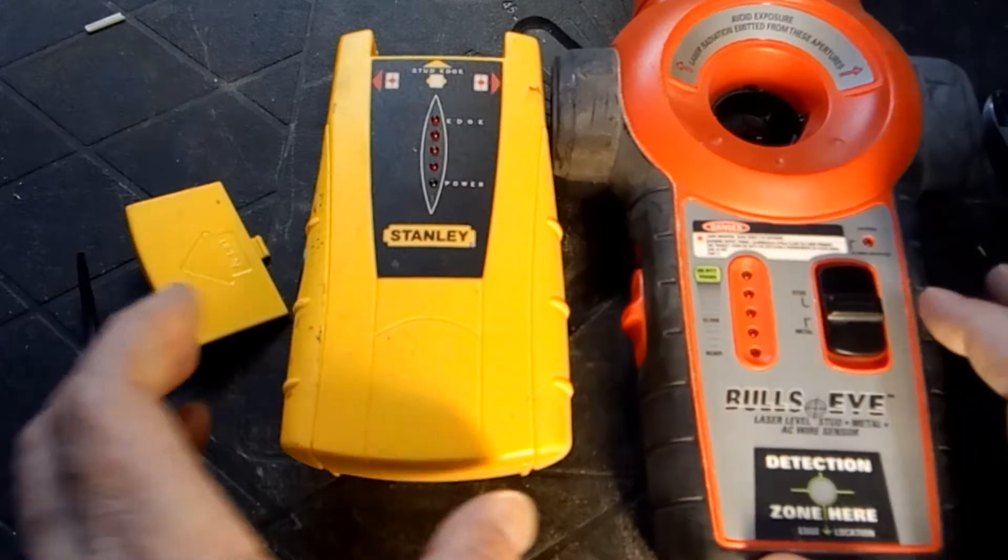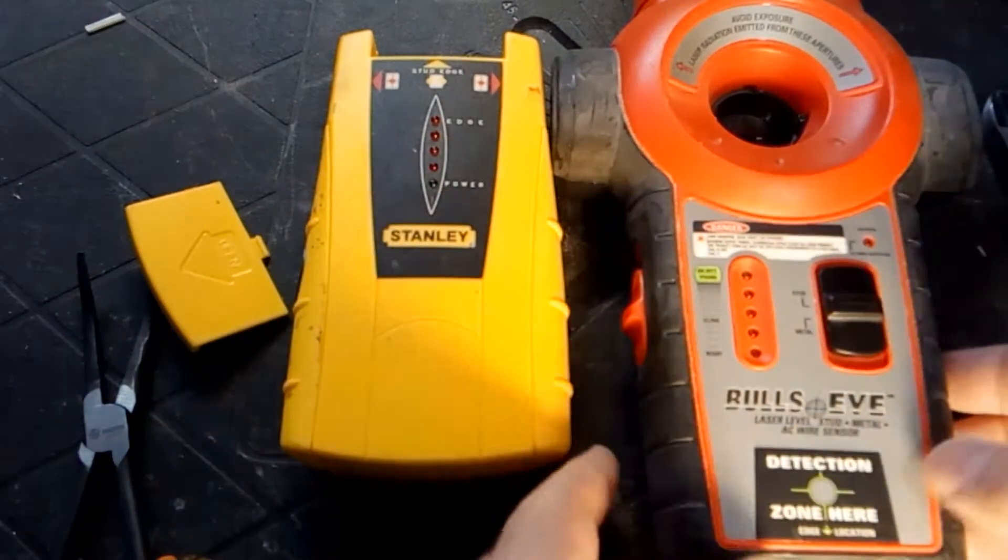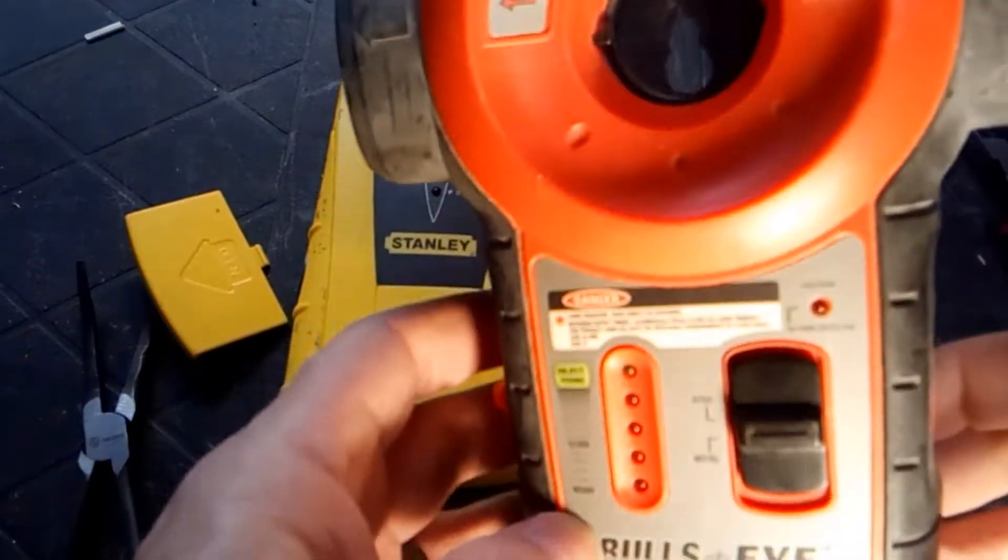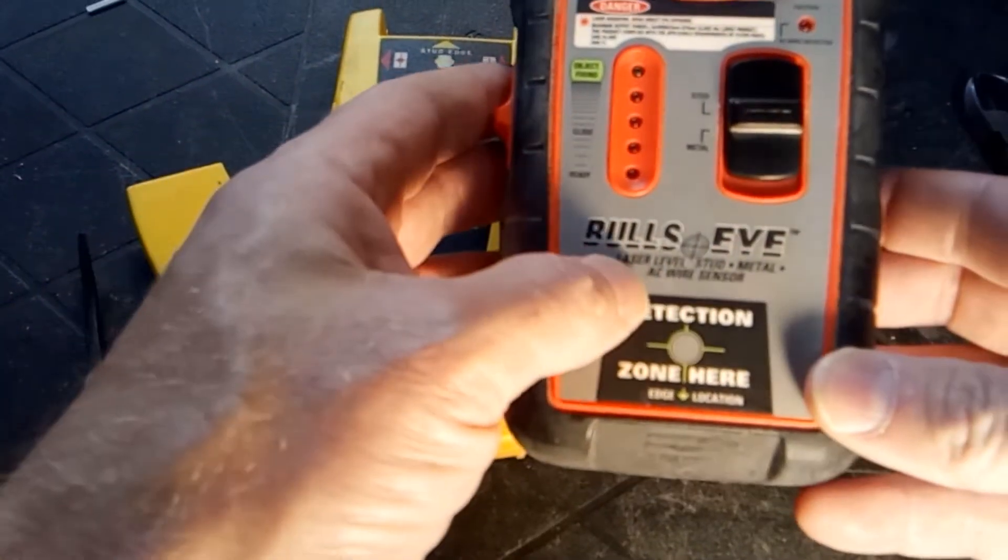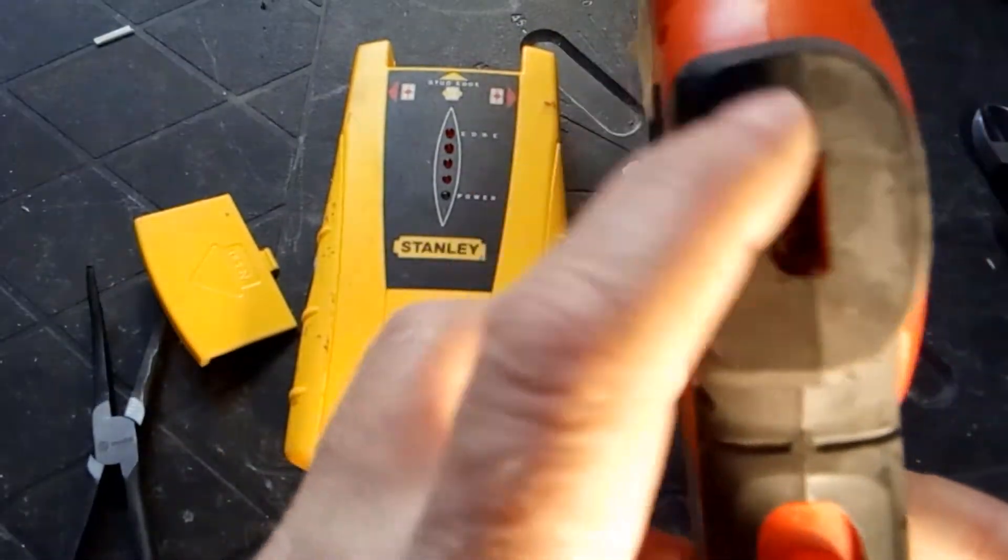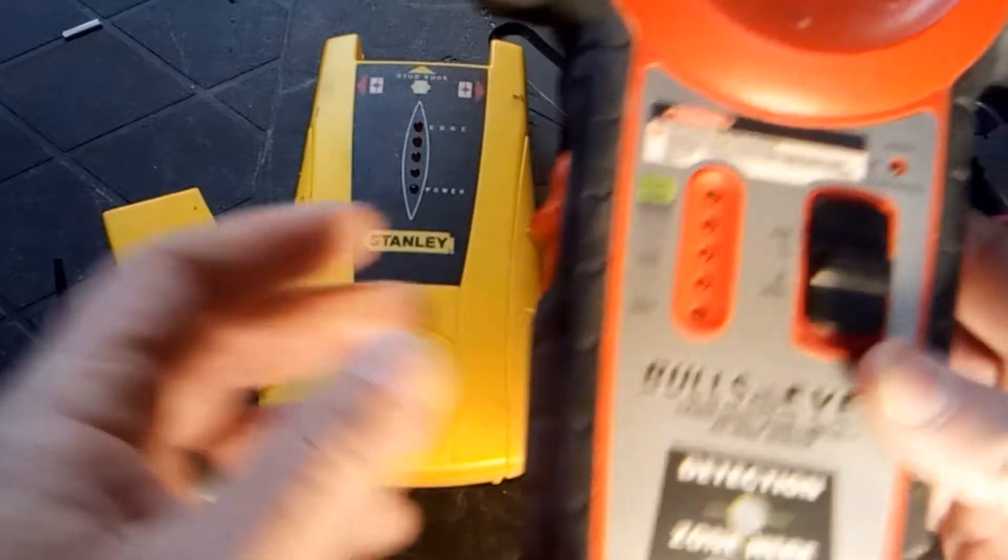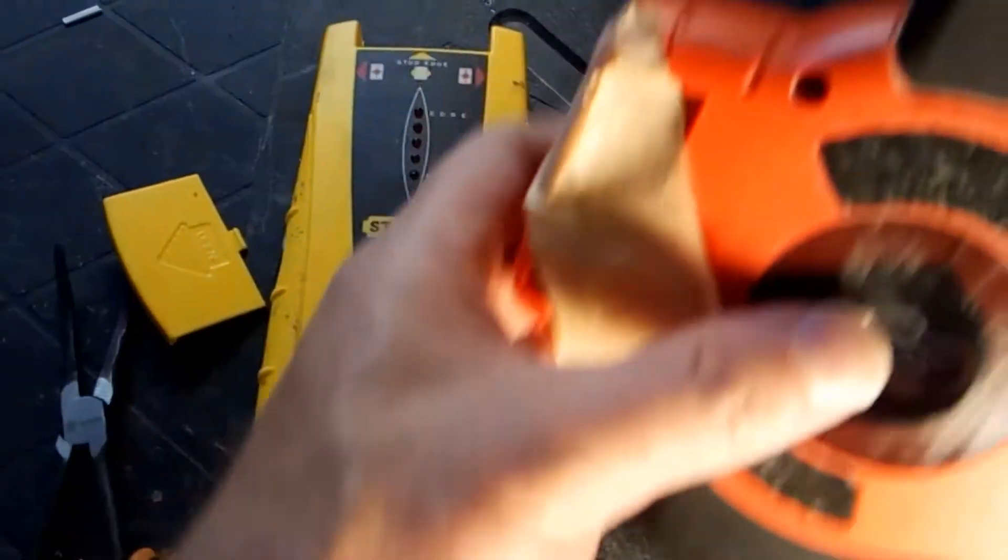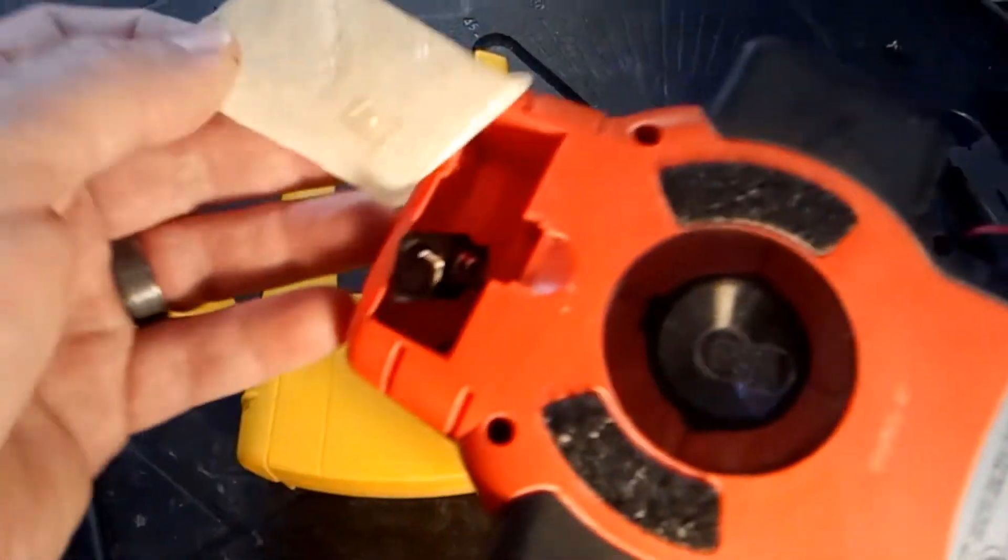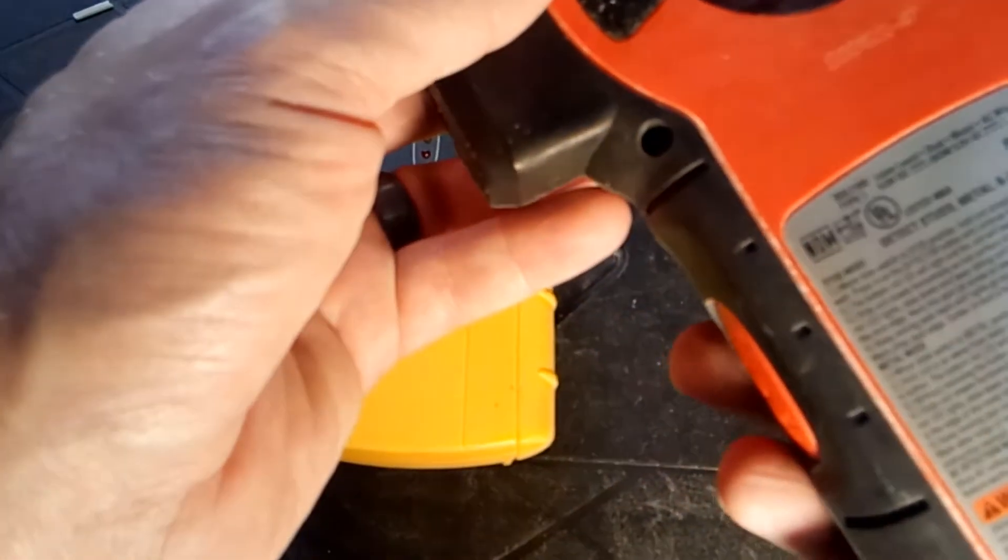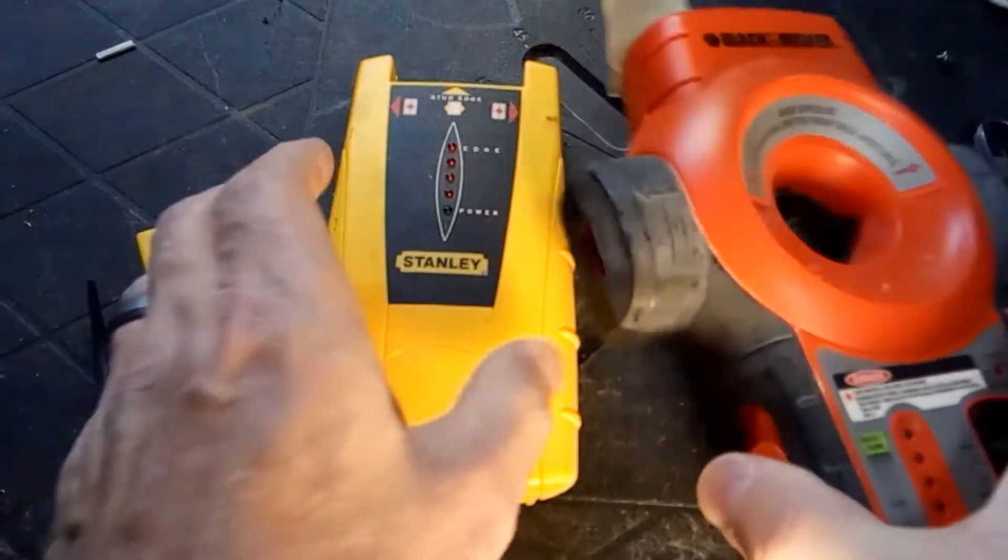In this video we're going to be looking at some stud finders. This one is a Black and Decker Bullseye. It also has a laser leveler, but this doesn't work. Parts are falling out of it, it's missing this piece, it's been dropped too many times and just doesn't really work.